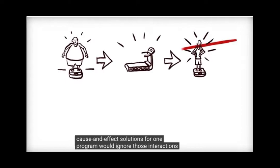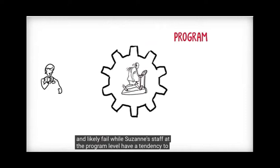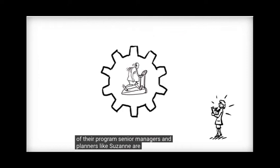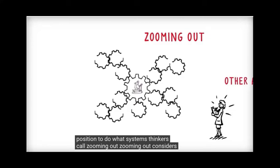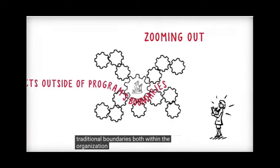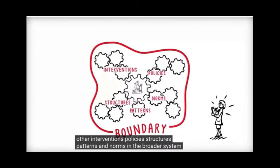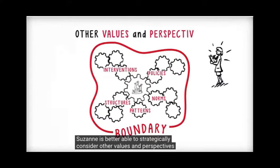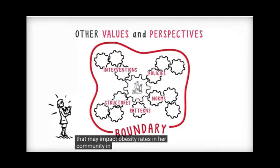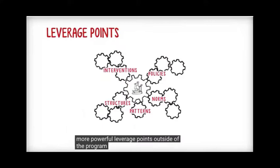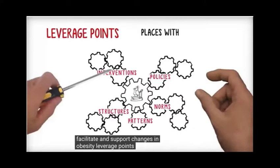While Suzanne's staff at the program level have a tendency to think only within the boundaries of their program, senior managers and planners like Suzanne are in a unique position to do what systems thinkers call zooming out. Zooming out considers how other aspects outside of a program's traditional boundaries — both within the organization and beyond — might influence the success of the program. By zooming out and looking at the influence of other interventions, policies, structures, patterns, and norms in the broader system, Suzanne is better able to strategically consider other values, perspectives, and the interrelationships among each that may impact obesity rates in her community. Leverage points are places within the system that can be tweaked in a way that supports greater impact.